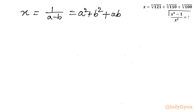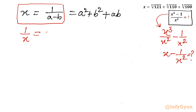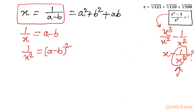Now I will evaluate our expression. Splitting the numerator with respect to the denominator: x³ over x² minus 1 over x², which simplifies to x minus 1 over x². Since x equals 1 over (a minus b), then 1 over x equals (a minus b). Squaring both sides, 1 over x² equals (a minus b)², which expands as a² minus 2ab plus b².